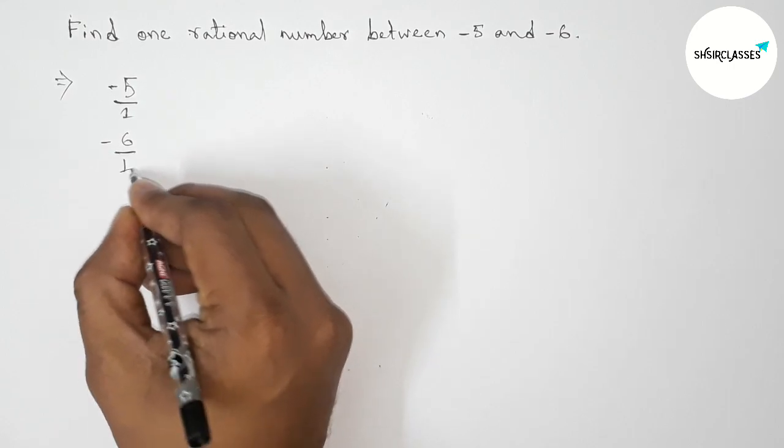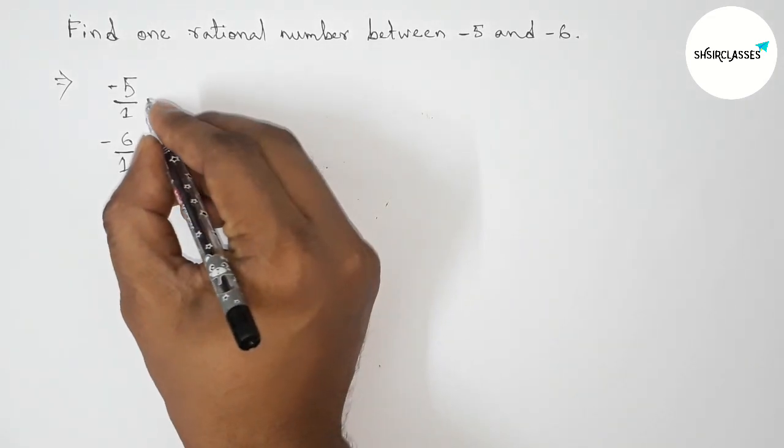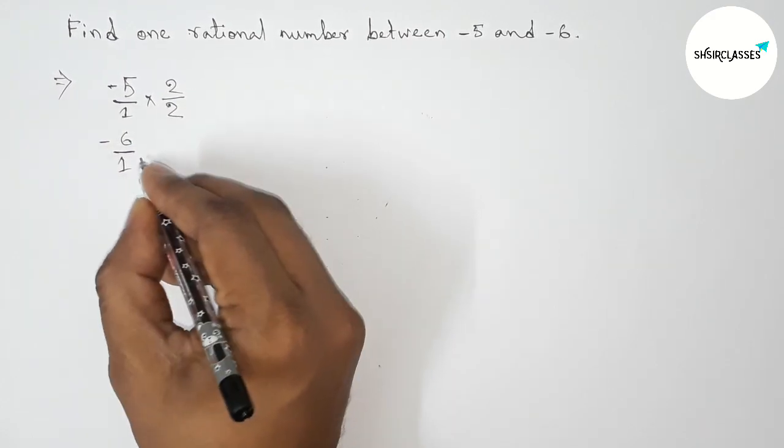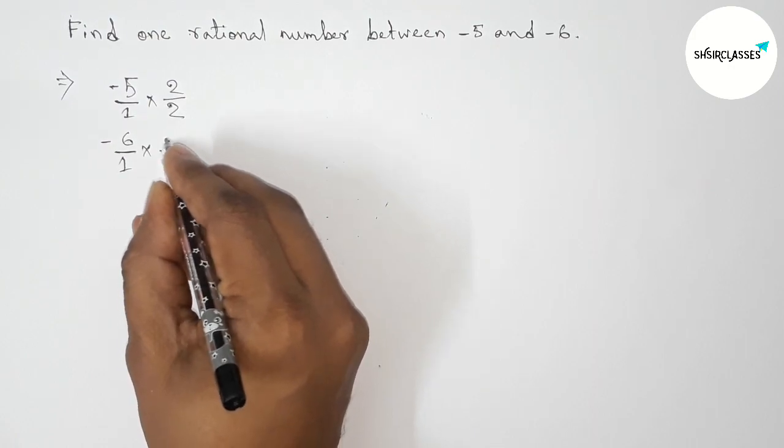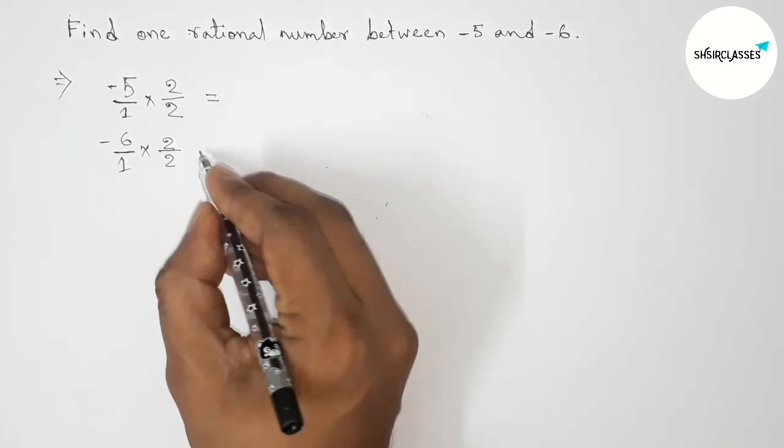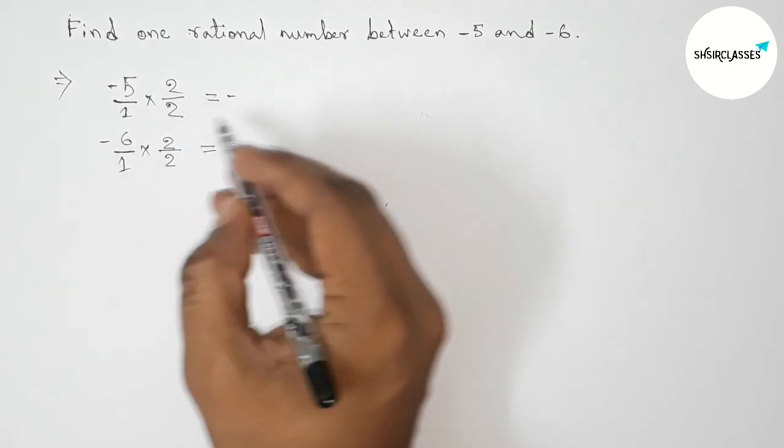So minus 5 by 1, that is equals to minus 5. Okay, so we can write by this way. Okay, so now we have to find one rational number, so we have to multiply with both numbers up and down by 2 for one rational number. Okay, so now calculating this.